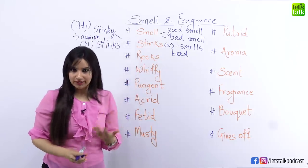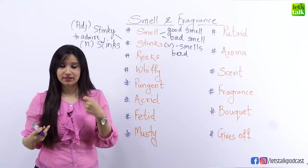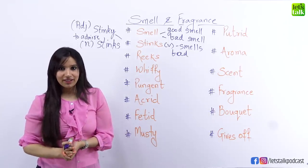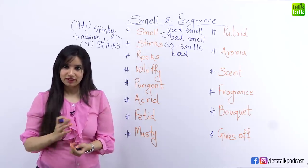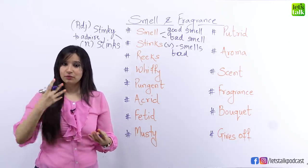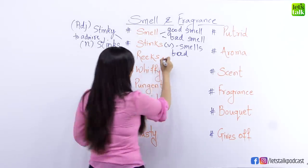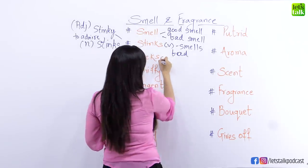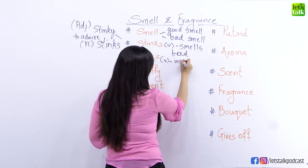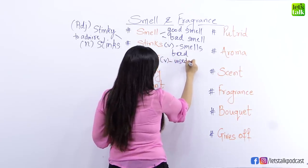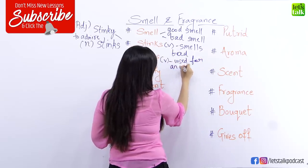In place of 'stinks', you can also use the word 'reeks', which is also used for an unpleasant smell. So you could say the house reeks of smoke, meaning you could smell smoke almost everywhere in the house. 'Reeks' is a verb, just like 'stinks', used for an unpleasant smell.